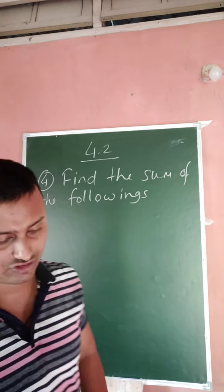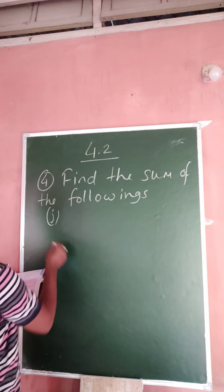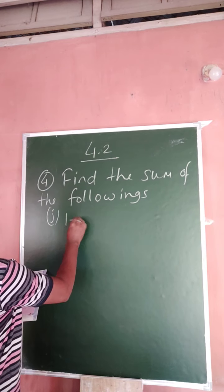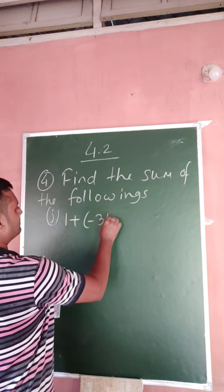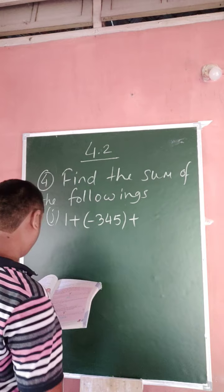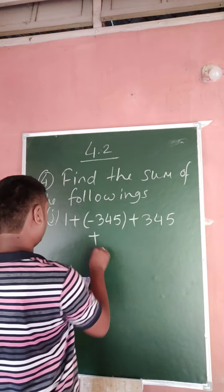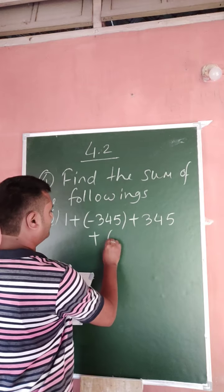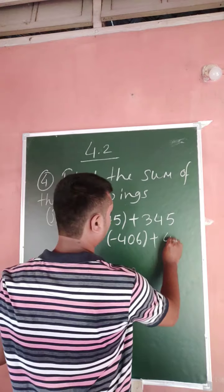So come to the last question, question number 4.2: 1 plus minus 345 plus 345 plus minus 406 plus 406 plus minus 765 plus 765. Lots of same numbers with different symbols given.